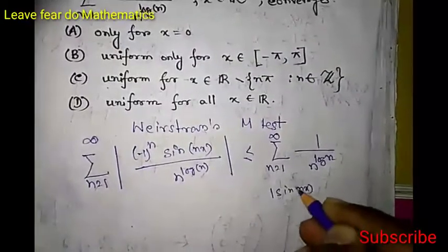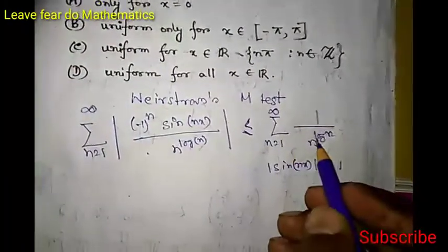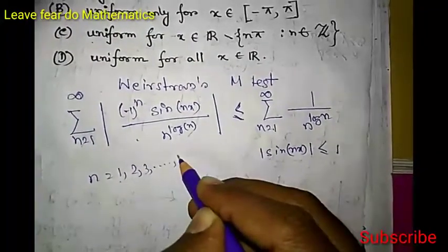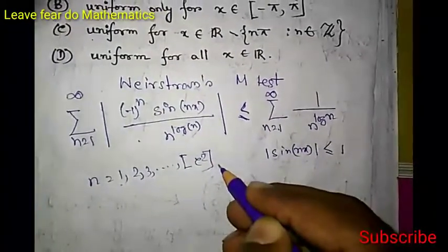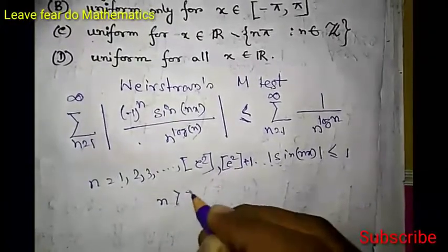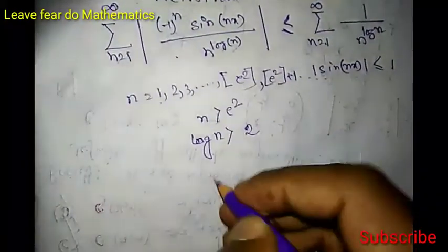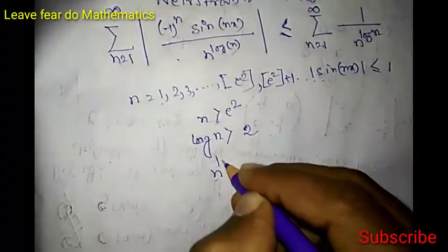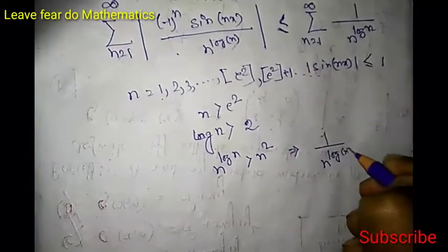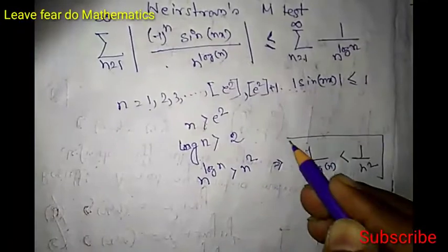Since |sin(nx)| ≤ 1, we can bound the series by sum of 1/n^(log n). Now, as n runs from 1 to infinity, after a finite number of steps we reach n greater than e². When n > e², we have log n > 2, so n^(log n) > n², and therefore 1/n^(log n) < 1/n². This inequality is valid for all n > e².